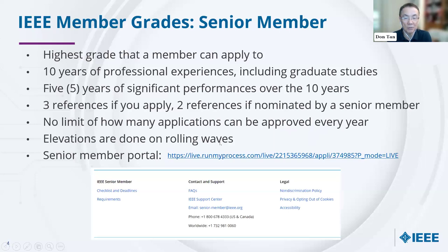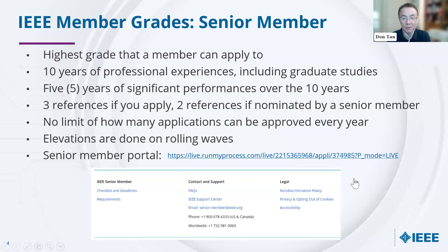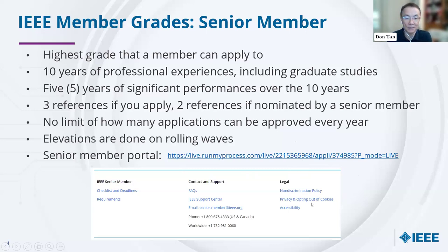Contrary to fellow elevation, senior member elevations are done on rolling waves — typically scheduled on four rolling waves, sometimes adding one more wave if there are enough applications. There's a portal where there's a lot of information, including how you calculate the qualification of five years. If you go there, as shown in the link, you will see a lot of information.